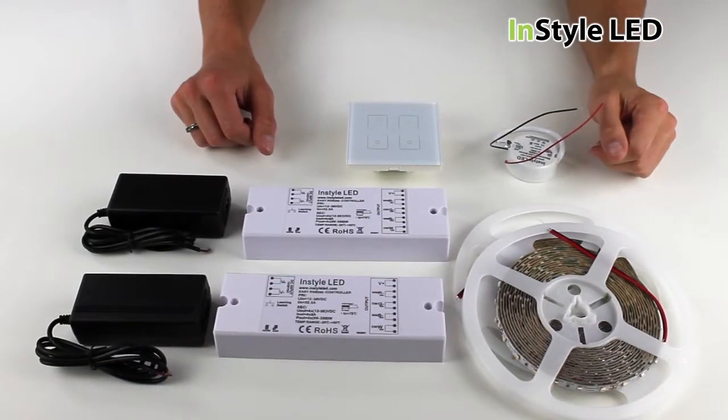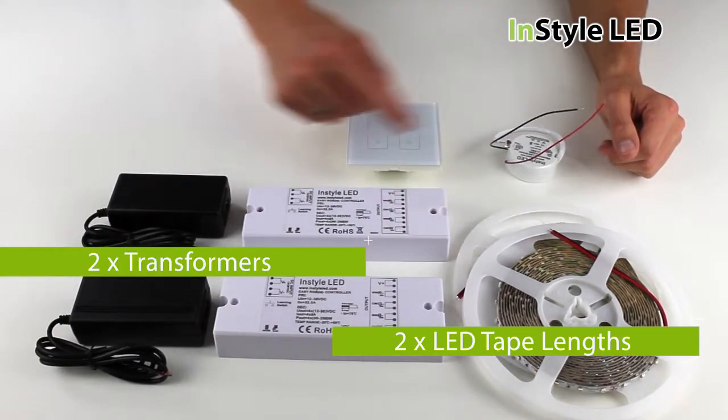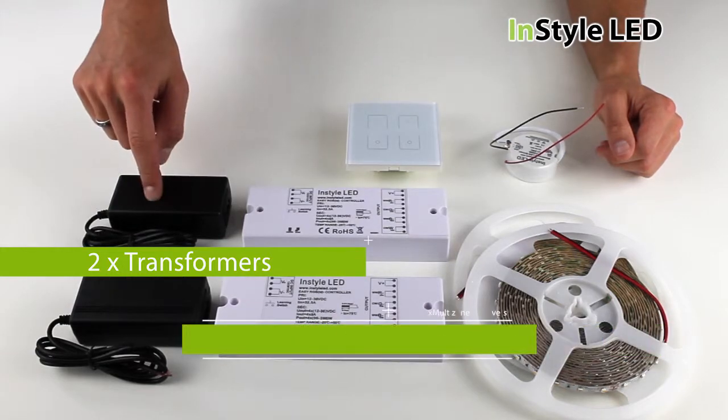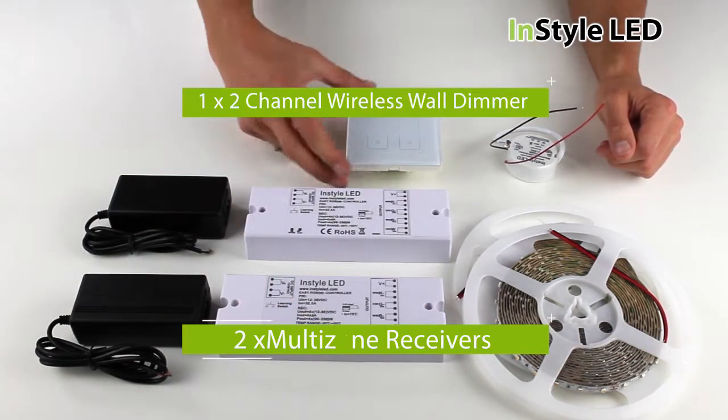For a complete kit you will require the following: 2x LED tape lamps, 2x transformers, 2x multi controller receivers, one 2 channel wireless wall dimmer.